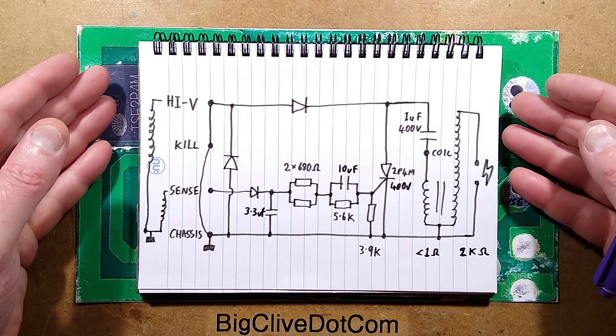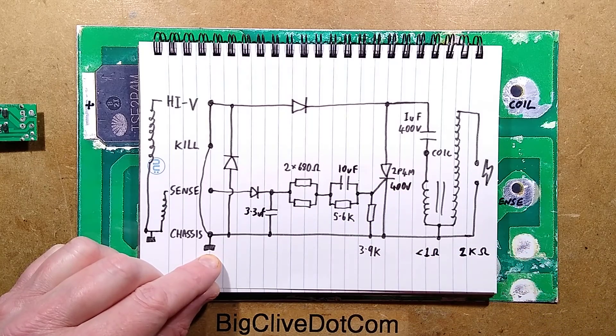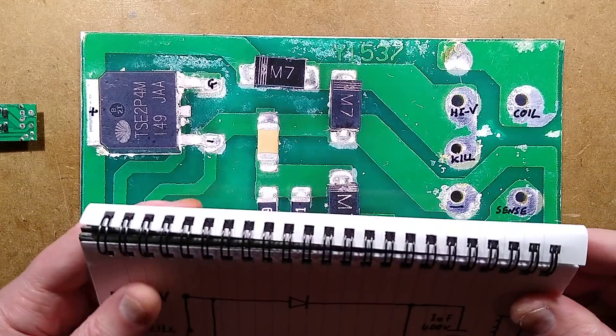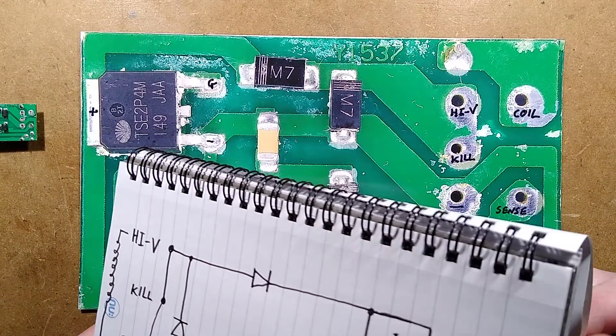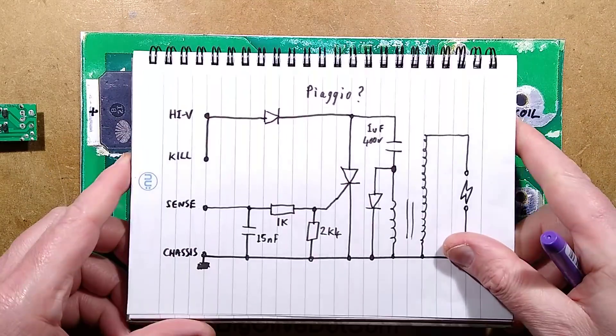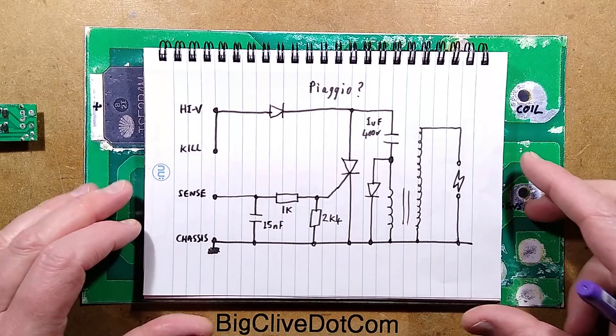However, this network of components here is strangely complex because there is another design floating about the internet. Someone has reverse engineered another unit, perhaps a more upmarket unit. And it's a Piaggio. In this instance, the circuitry is infinitely simpler.